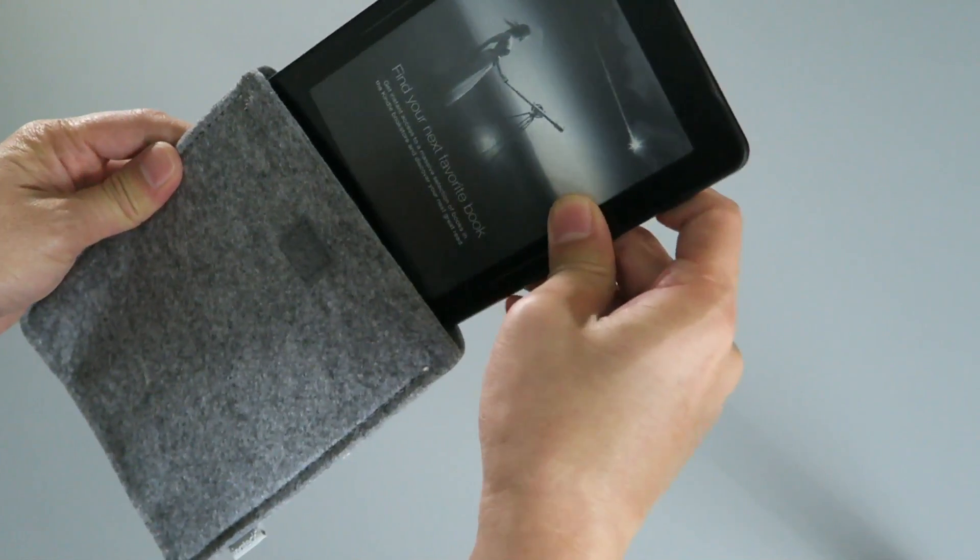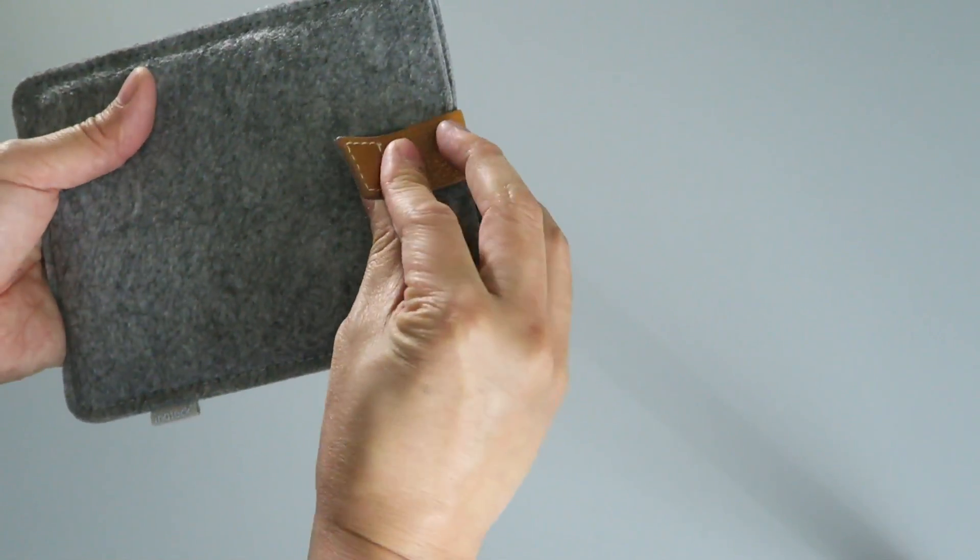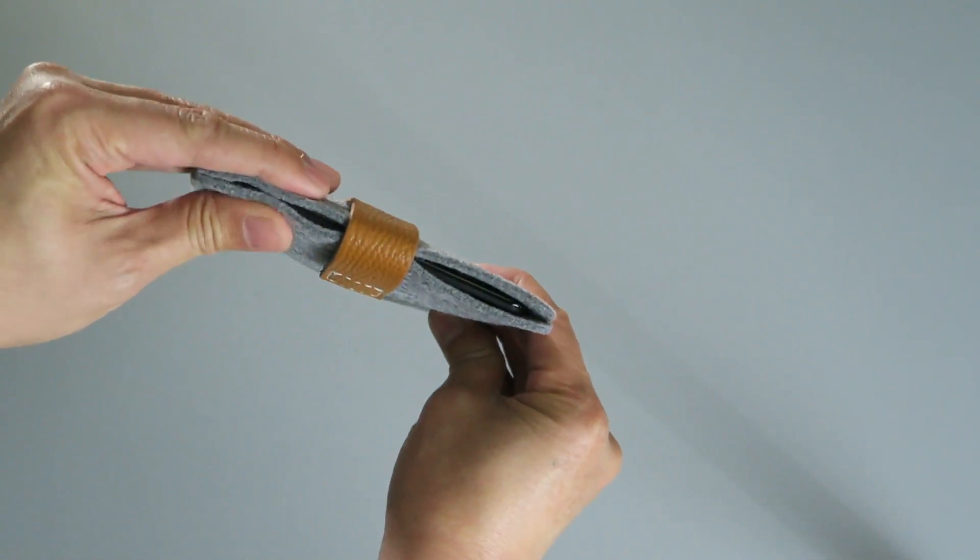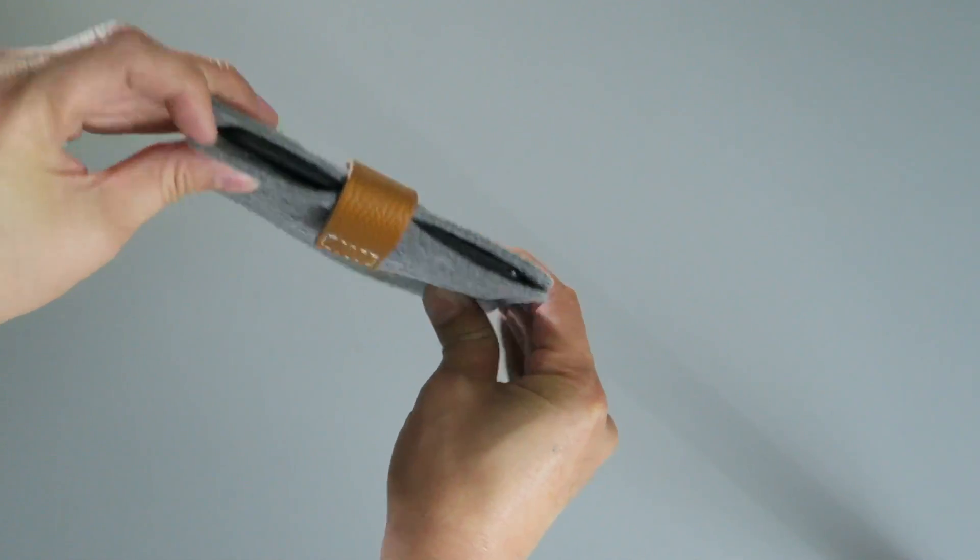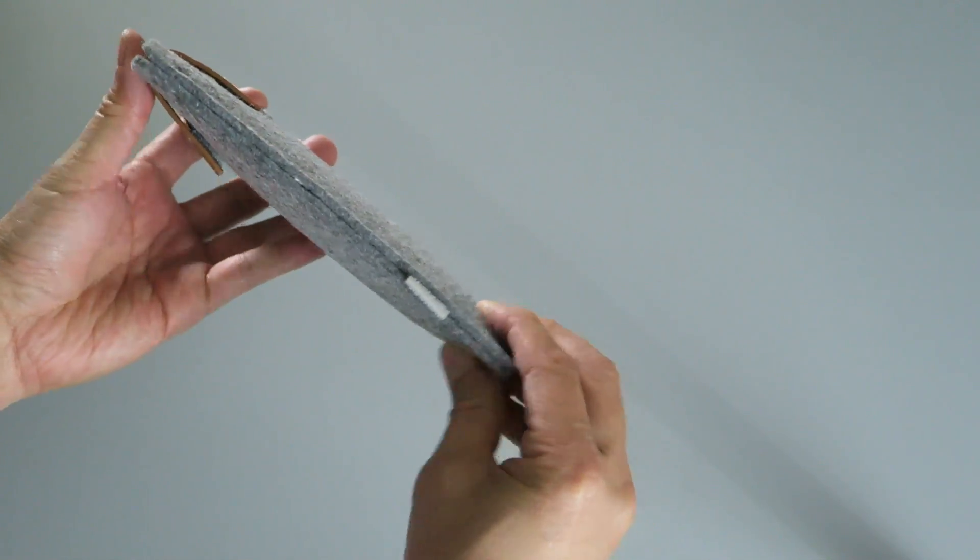As you see, I put the Kindle in here, and it's got a nice leather strap that holds it in place so it won't slip out. It's a really nice compact design that fits the Kindle Voyage perfectly. Now, they also make a version for the Kindle Paperwhite as well for a custom fit.